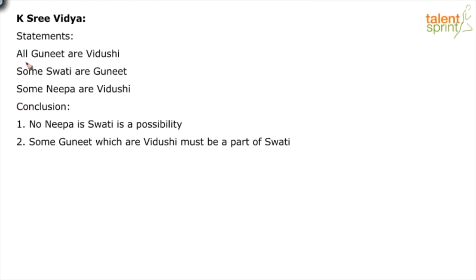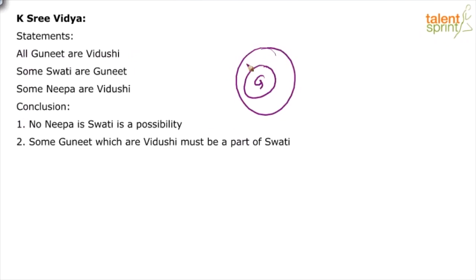There are three statements and two conclusions. Let's draw the diagram first. All Gunit are Vidusha — so all G are V.